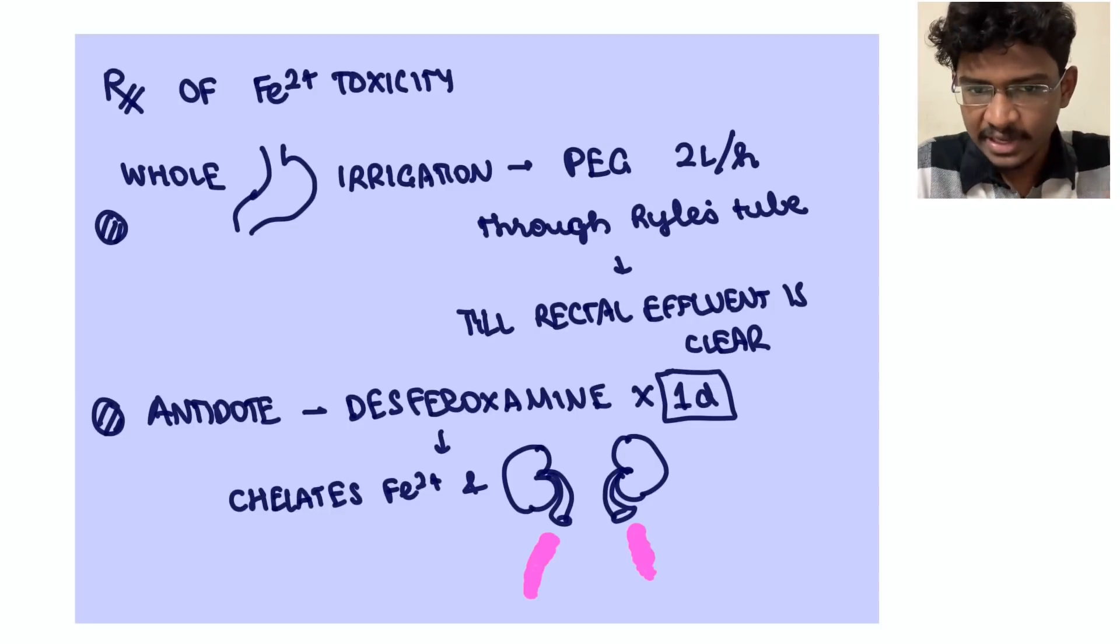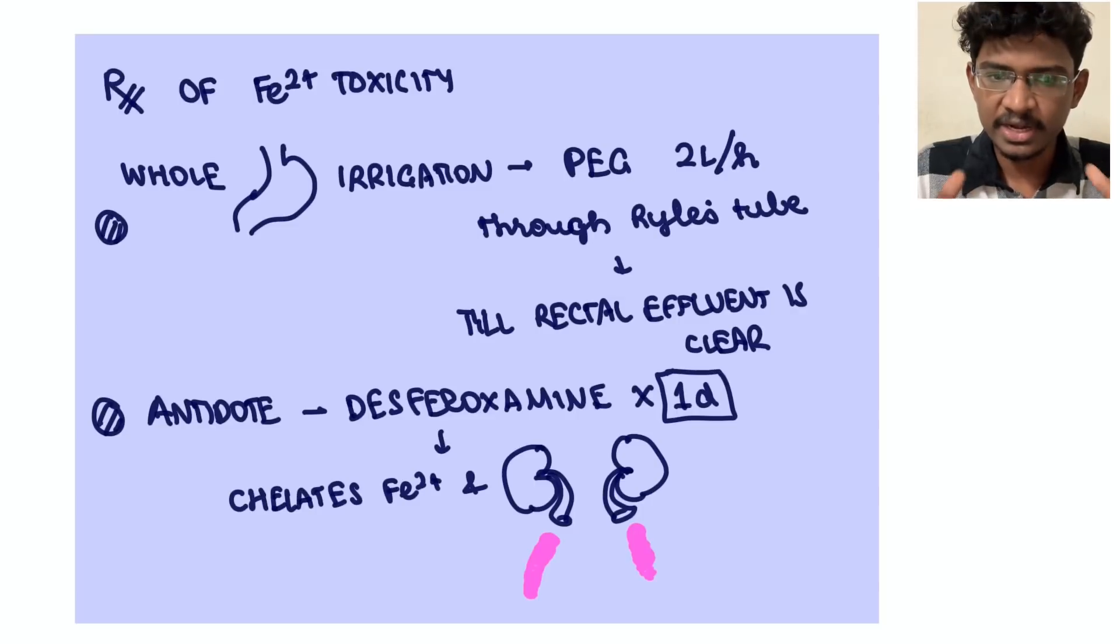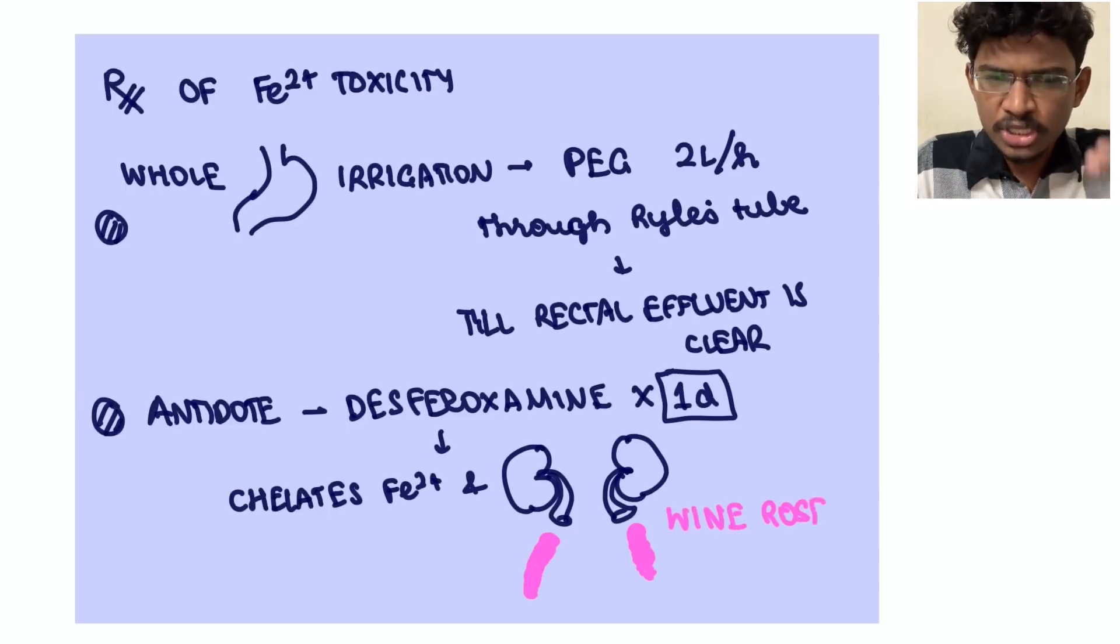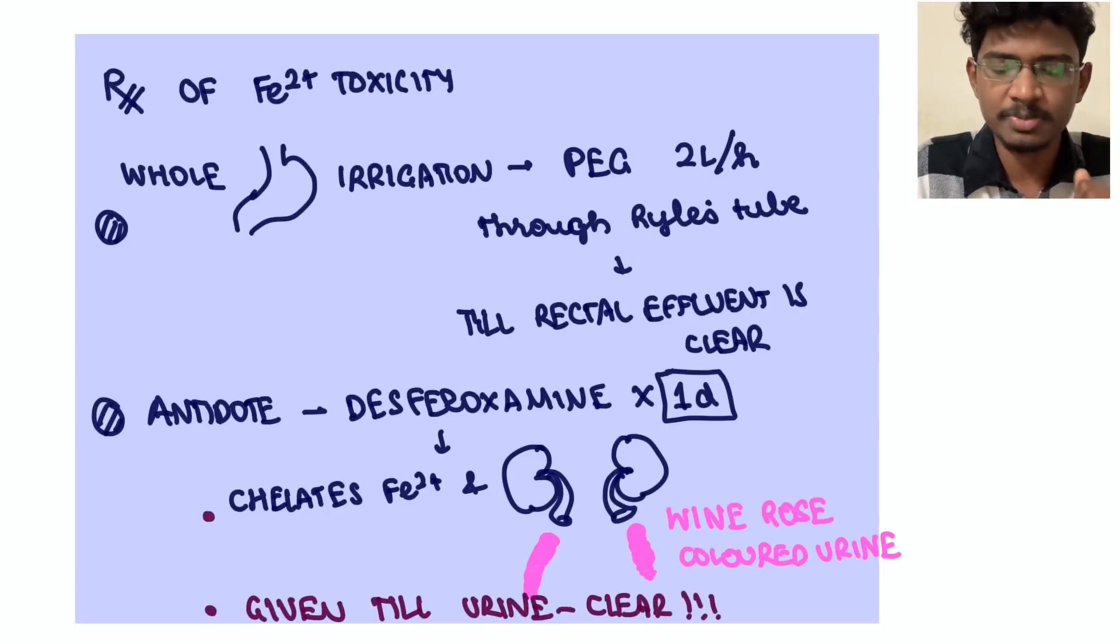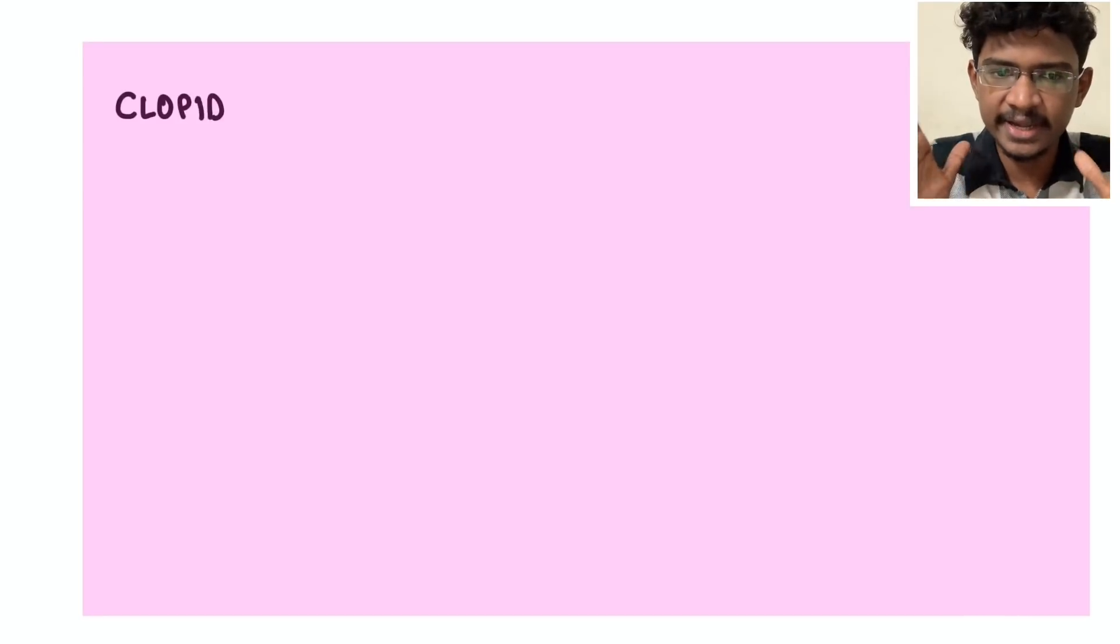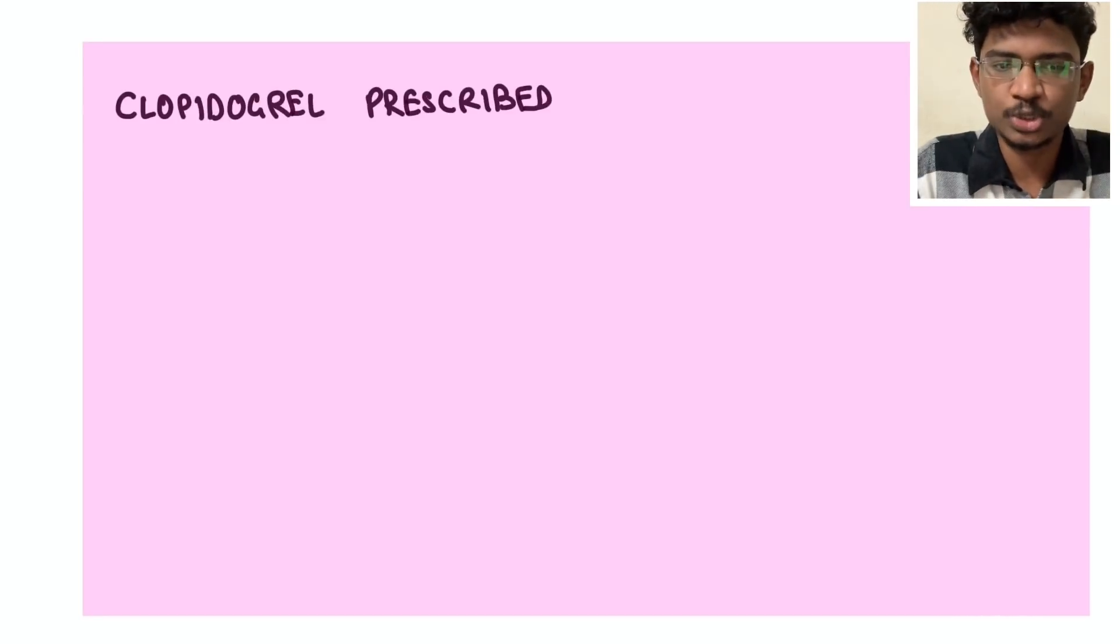So what happens is this is a chelator, meaning whatever iron which has been absorbed into circulation - those in the stomach we are clearing by the PEG and those which are absorbed in the circulation we are clearing by desferoxamine. This chelator goes and binds the small iron particles and gets excreted into kidney. So when it is excreted, this urine turns rosé wine urine they call. So till that urine becomes clear we should be giving this desferoxamine. So this is also an indicator how long you should do desferoxamine. This is in detail of iron toxicity and how to manage iron toxicity.